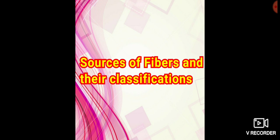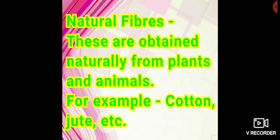Students, there are different sources through which we obtain fibers, but we classify them into two parts. First is natural fiber and second is man-made fiber. Fibers that are obtained naturally from plants or animals are known as natural fibers, for example, cotton, jute, etc.